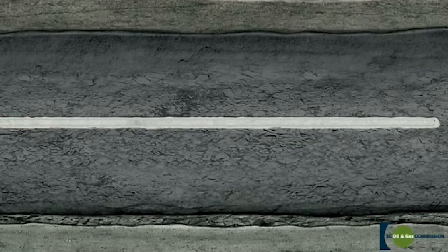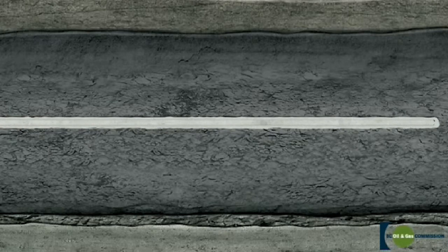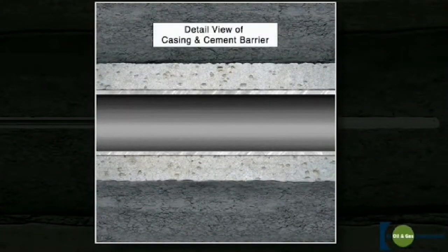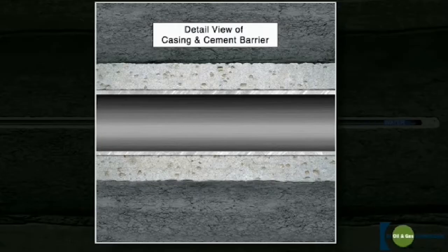Casing the well is a very important process because it permanently secures the wellbore and it prevents hydrocarbons and other fluids from seeping out into the formation as they are brought to the surface.